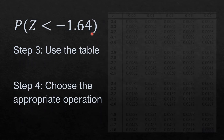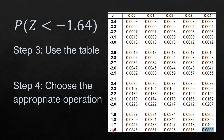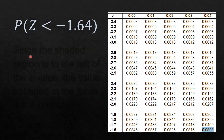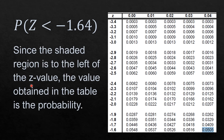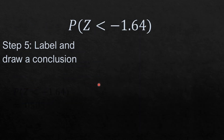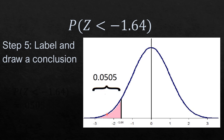To locate negative 1.64 using the table, we have negative 1.6 on the left and 0.04 on the top portion. Finding their intersection gives us negative 1.64, whose corresponding area is 0.0505. Recalling step 4, since the shaded region is to the left of the Z value, the value obtained in the table is the probability. This implies that the probability corresponding to Z less than negative 1.64 is 0.0505, which is the area of this shaded portion.